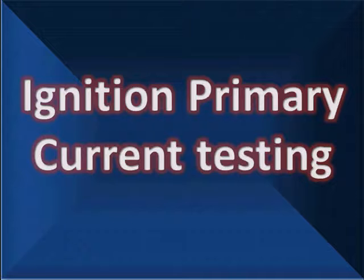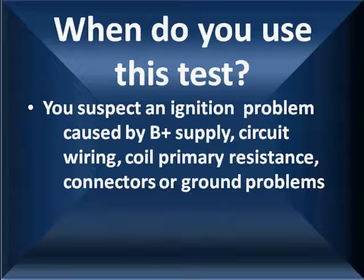Ignition primary current testing. We're going to tell you when you should use this test. Use it when you suspect an ignition problem caused by B plus supply, a circuit wiring problem, coil primary resistance, connectors to the DIS module and coil, and ground problems. In the last few years, we have found a great many problems that have been mystery misfire problems caused by thermally stressed connectors. Take the time to use advanced testing like this when your routine testing fails to work.